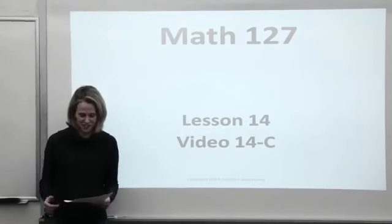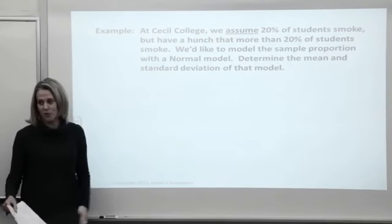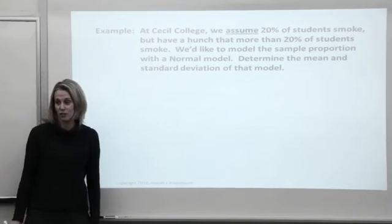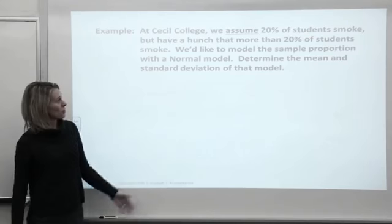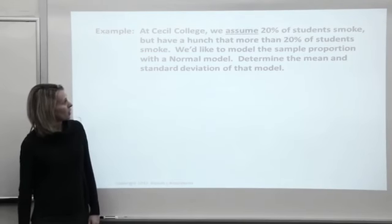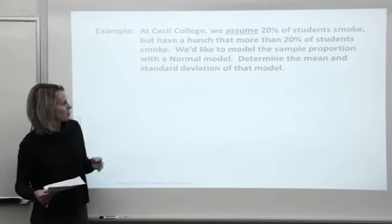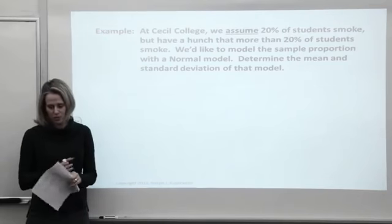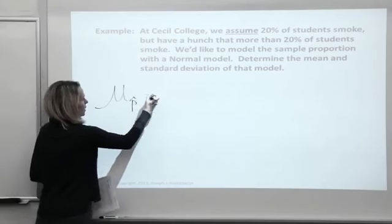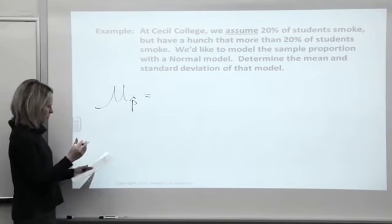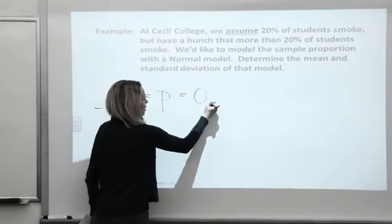We're in video 14C. I'm going to pick up right where Joe Kuprasan left off with the Cecil College smoking example. We were assuming that 20% of students smoke, but we have a hunch that more than 20% of students smoke at Cecil. So we'd like to model the sample proportion with the normal model.